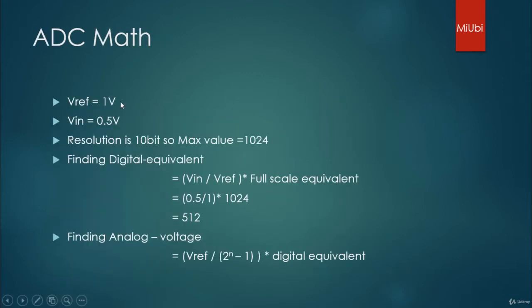Now we shall see a little bit on ADC math. For example, your V reference is 1 volt and V input is 0.5 volt, and you have an ADC with a resolution of 10 bit. So maximum value you can go for is 2 power 10 minus 1, which is 1023.